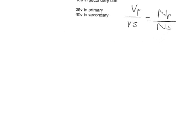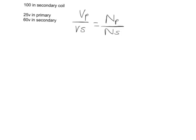So the first step is that we need to insert our figures into this formula. So I'm just going to put that to one side. We know the voltage in the primary is 25 and we know that the voltage in the secondary is 60.